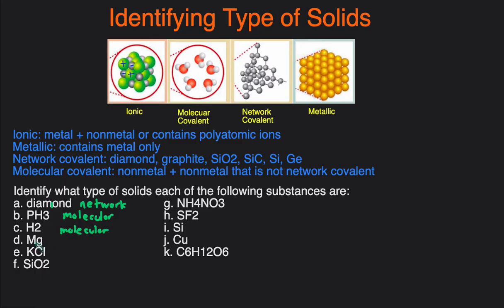Next one, Mg. Mg is just a metal, so that would just be metallic. Next one, KCl. K is a metal and then Cl is a non-metal, so this would just be ionic because it's a metal and non-metal. Next one, silicon dioxide. This is one of the main network covalent ones, so this is going to be network covalent.